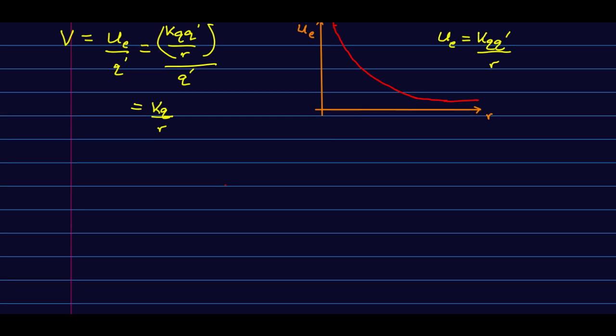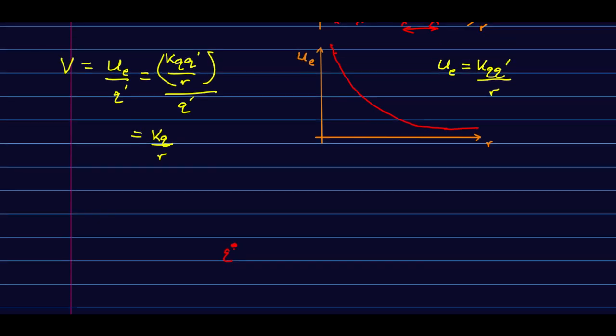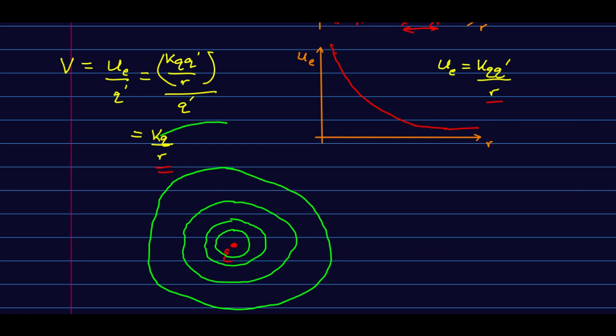Now let's think about what the equipotential curves look like in the vicinity of this charge q. We know that the potential only depends on radial distance away from it, so the equipotential curves must be circles. We also know that the potential is steep in close—it's going to be exactly the same shape as this Ue versus r graph because all we've done is divide out a constant. Since it's steep in close, that tells us that the equipotential curves are going to be close together there, and they're going to get more and more spaced out as we move farther from the source charge because the slope of the potential versus position is getting smaller out here.